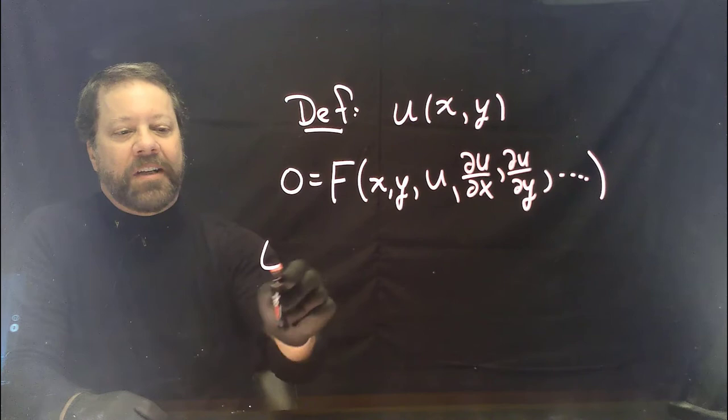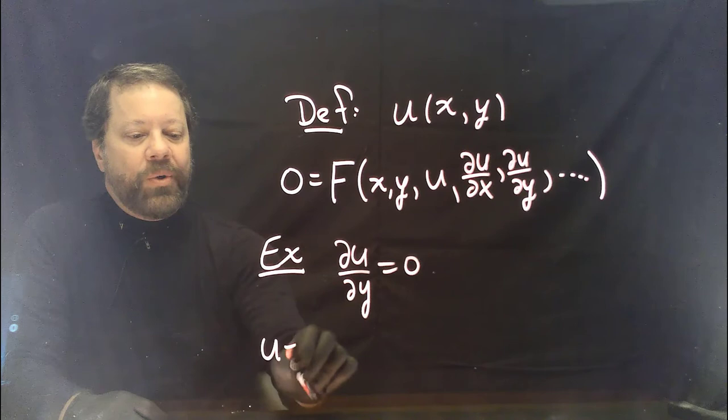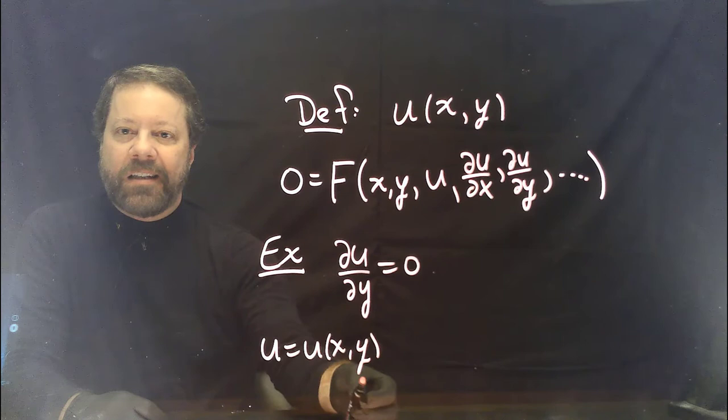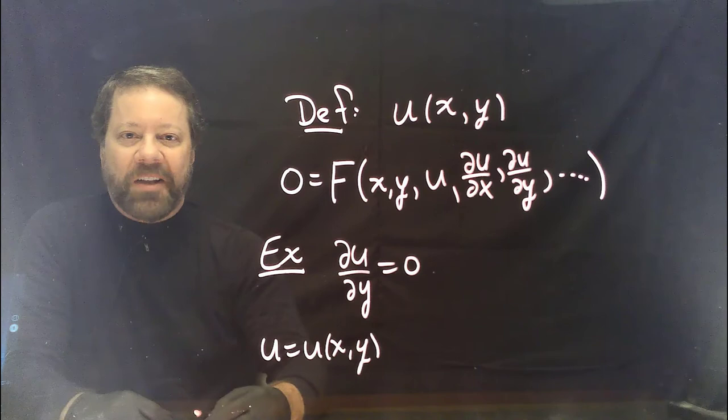For example, let's suppose I have the differential equation du/dy equals zero, where u is a function of x and y. When I write an equation like this, I'm showing the independent variables that u depends upon — just saying u is a function of x and y, nothing more.